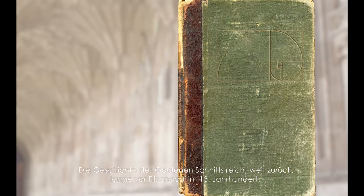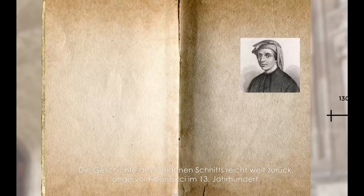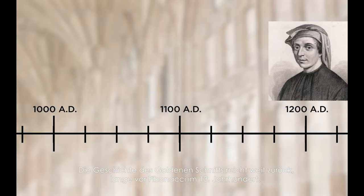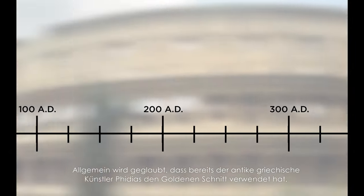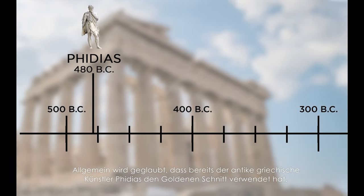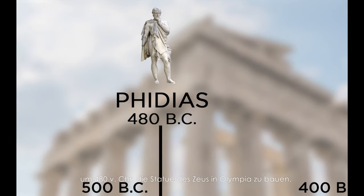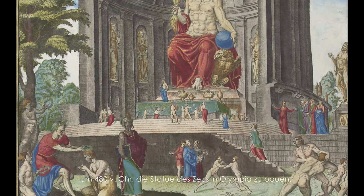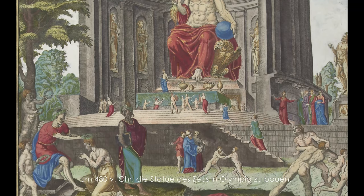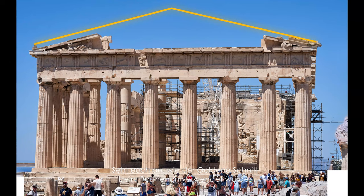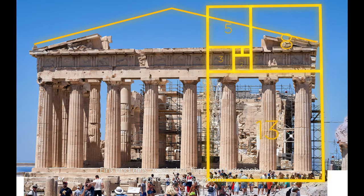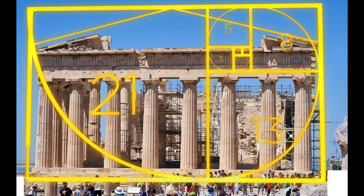The history of the golden ratio goes back far beyond Fibonacci in the 1200s. In fact, it's believed that the ancient Greek sculptor Phidias used the golden ratio around 480 BC when he sculpted the statue of Zeus at Olympia. And check out how the ratio is used at the Parthenon: 1 and 1, 2, 3, 5, 8, 13 — the golden ratio.